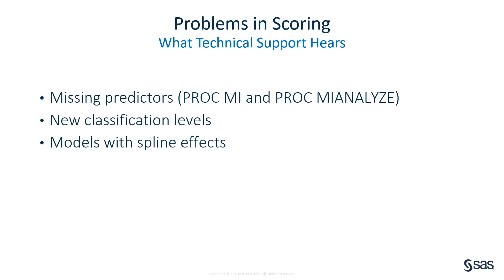Problems can arise when you are scoring a new set of observations. You might have missing values in your predictors. A predicted response cannot be created when any of the predictor variables are missing. Fortunately, PROC MI and PROC MI Analyze can help here, enabling you to impute values for those missing predictors. Scoring methods cannot create predictions for new levels of classification effect variables. If you have two levels of a classification effect in the data used to develop a model, and you introduce a third level in your scoring data, then predictions for observations involving that new third level will be set to missing. Finally, scoring with models involving splines can be very difficult to do.